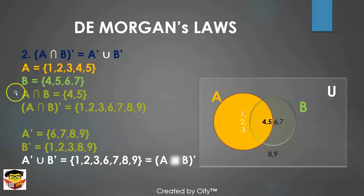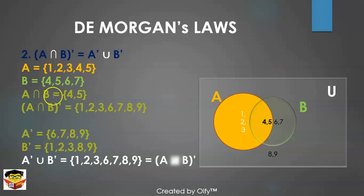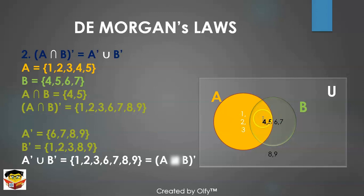Using the same sets A and B, for the left-hand side we calculate (A∩B)'. First, A∩B is whatever is common between A and B, which is elements four and five. The complement of A∩B is everything outside of {4, 5}, so that gives us one, two, three, six, seven, eight, and nine. That is our left-hand side.